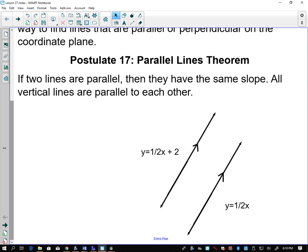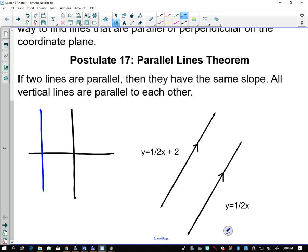All vertical lines are parallel to each other. So when they say all vertical lines, if I'm on a coordinate plane, all of those are going to be parallel to each other. All horizontal lines are going to be parallel to each other there. Here we have an example of two parallel lines: y equals 1 half x plus 2, and y equals 1 half x. They have the same slope, different y-intercept. If they didn't have a different y-intercept, then they would be the same line.